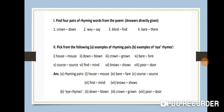Eye-rhyme means words that look like rhyming words but their pronunciation is somewhat different. Rhyming pairs are words whose endings are pronounced the same — for example: house/mouse, bear/pair, find/mind. Their pronunciation is the same.